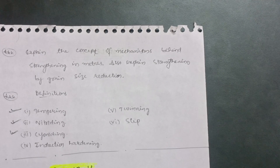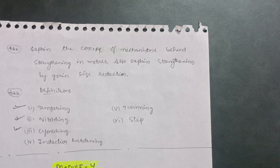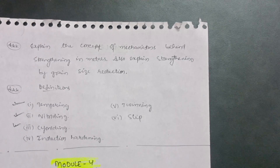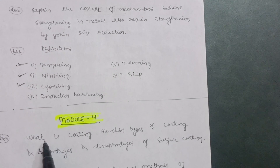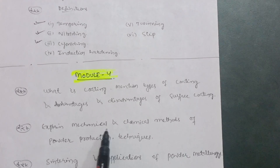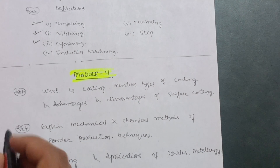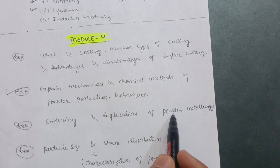For the remaining two modules, it is your choice — you can refer to two or three of the most important questions from each module. For Module 4: what is coating, mention types of coating, and advantages and disadvantages of surface coating. Then, explain mechanical and chemical methods of powder production techniques — this is a super important question. What is sintering and what are the applications of powder metallurgy?